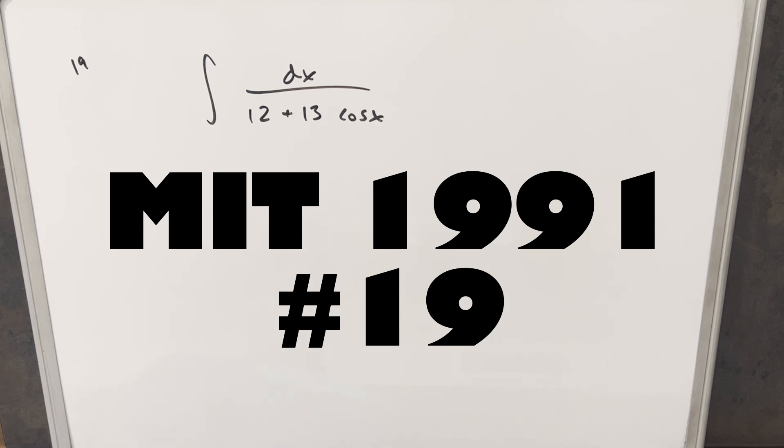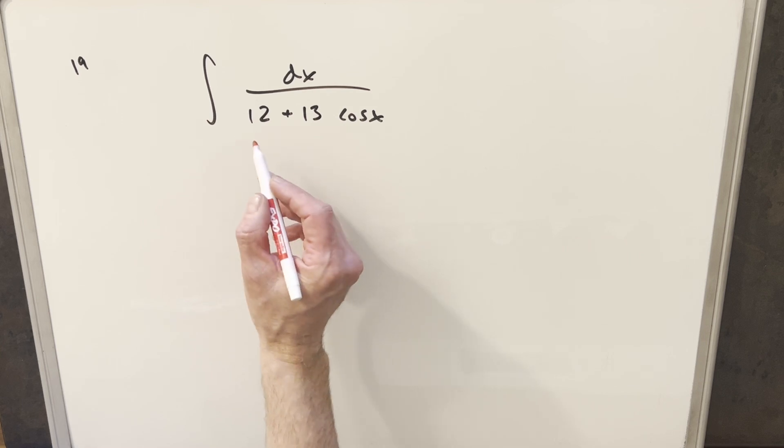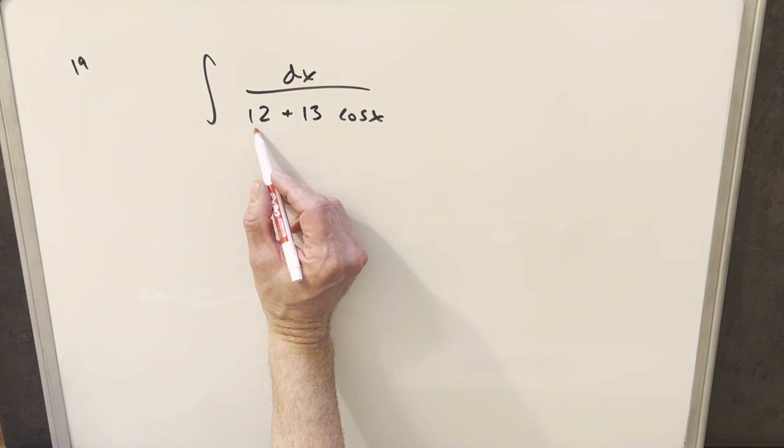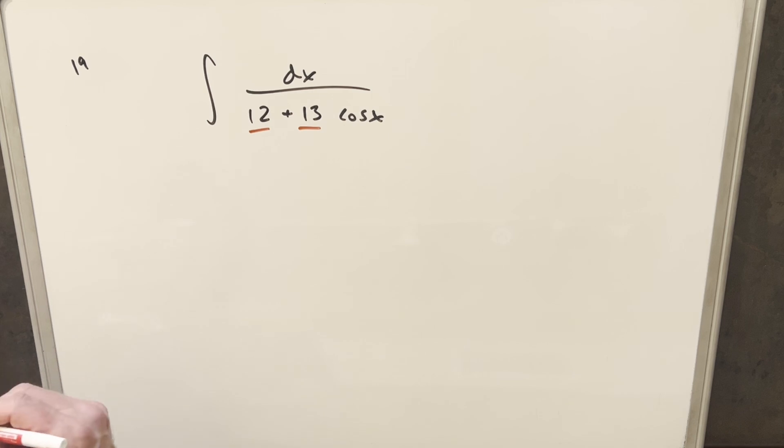We have an integral of 1 over 12 plus 13 cosine x dx. I thought it was kind of interesting how they set this up. We would like this to be, if this was the same number here, if we had 12 and 12 or 13 and 13, we could factor it out, and that's not too bad.